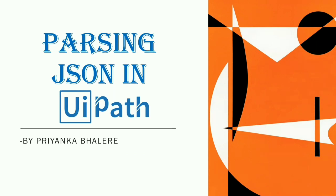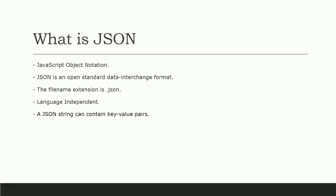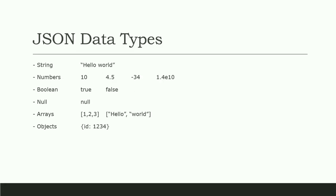So let's get started with JSON. JSON is a JavaScript Object Notation. It's a text format in which you can transfer data between client and server. JSON is language independent, easy to read, much simpler, and lightweight to send back and forth due to its small file size.